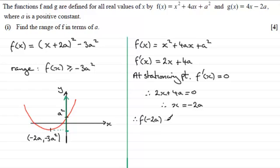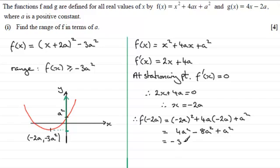So we would therefore do f of minus 2a, substitute for x as minus 2a in here. And if we just write that in, we've got minus 2a all squared, plus 4a, multiplied by minus 2a, plus a squared. And what does this give us? Well, this gives us 4a squared. And here we have minus 8a squared, and then plus a squared. And that turns out to equal minus 3a squared.